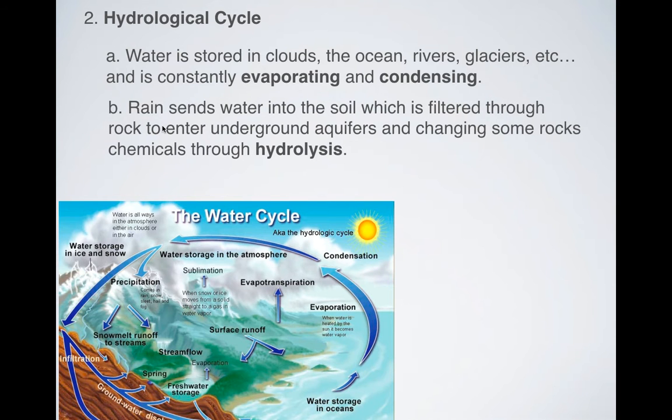And so when rain happens, some of that rain is going to land on actual soil, it's going to get filtered, it's going to infiltrate the soil, it's going to go underground into aquifers, which is where we get most of our water from anyway. And then also we've got some hydrolysis that's going to happen, which is a form of chemical weathering that we talked about earlier.